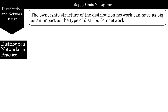An independent distributor wants to optimize its own enterprise and not necessarily the entire supply chain. Attempting to optimize over a distribution network with multiple enterprises requires a lot of skill in coordinating the incentives of each of the players and creating the right relationships. Be sure to consider the impact of both physical flows and ownership structure when designing a distribution network.